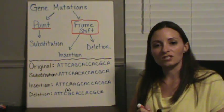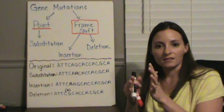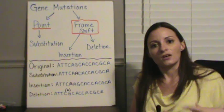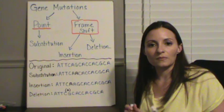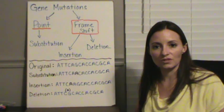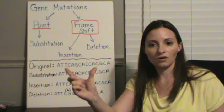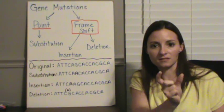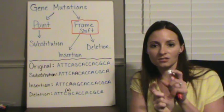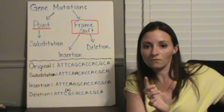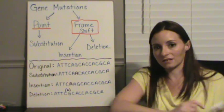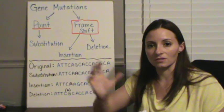And frameshift mutations are actually going to take and shift everything down. So what happens, if you remember from translation, when we read our codons, we read every three bases. So if we take and change and shift everything down one, it's going to change everything that we read from that point after, so it's going to shift everything.